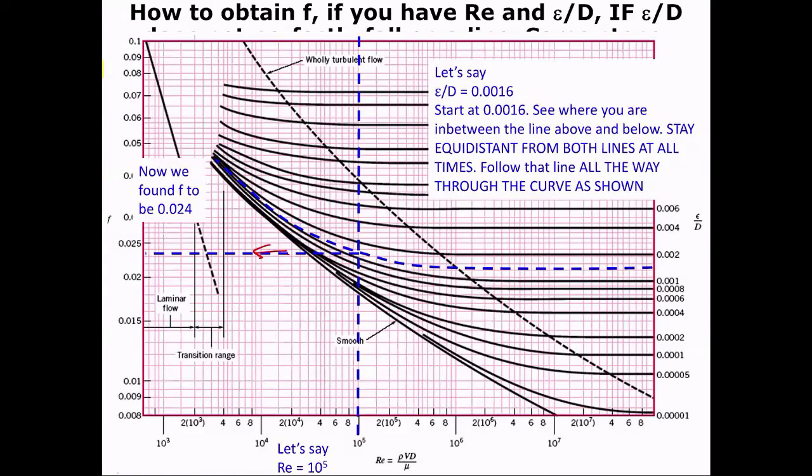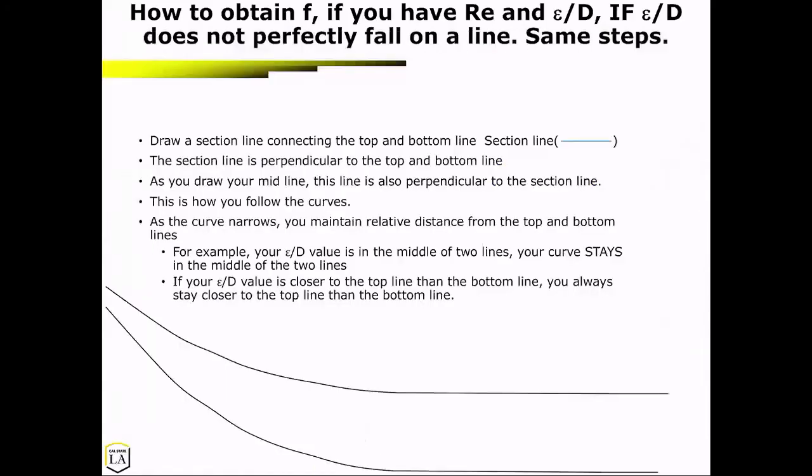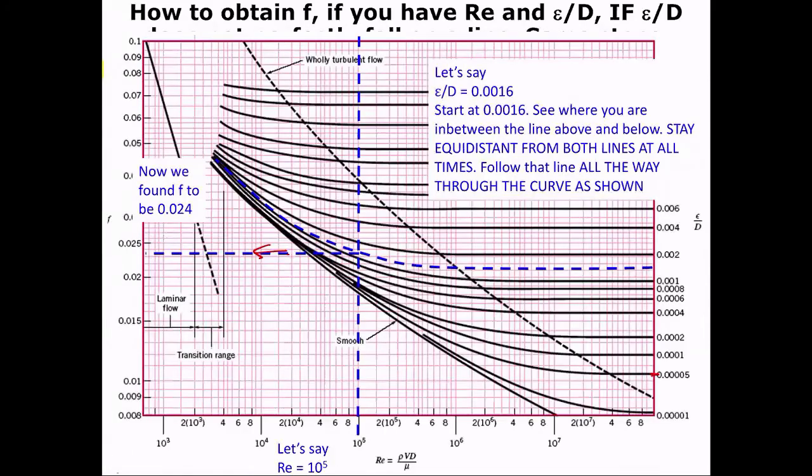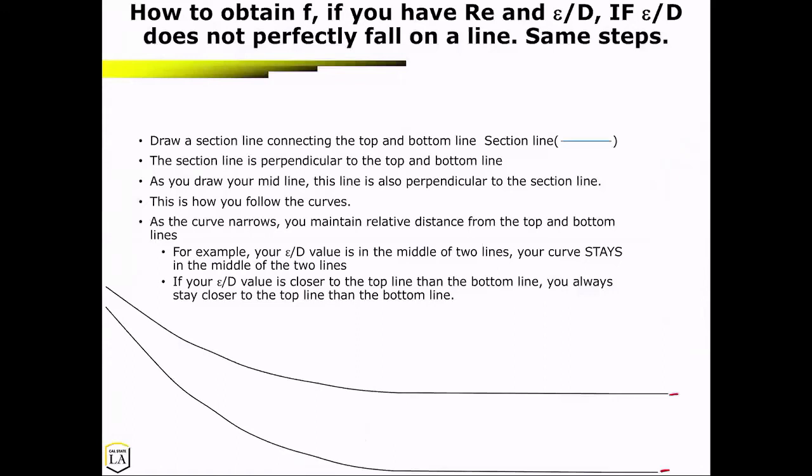So this just kind of walks you through the steps. The thick black lines are the values given. And we're going to walk you through how to follow the curve. So what you're going to do is draw a section line connecting the top and the bottom line. The section line is perpendicular to the top and bottom lines.